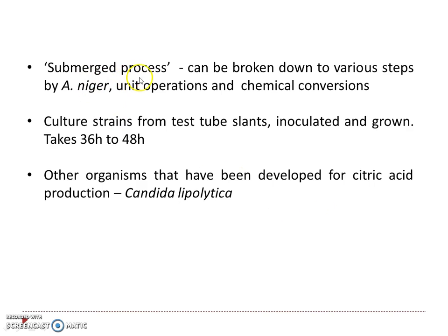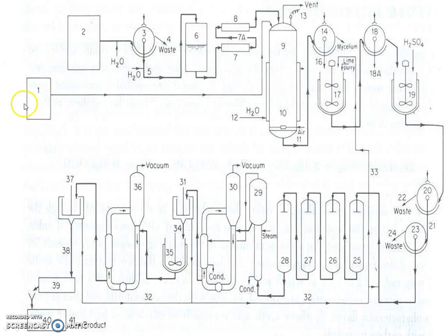The submerged fermentation process involves various unit operations. To start citric acid production, culture strains from test tube slants are selected, inoculated, and grown for inoculum development, which takes about 36 to 48 hours. Another organism used for citric acid production is Candida lipolytica. In the flowsheet, the feed is dextrose glucose syrup, and number 1 is the inoculum developed from slants grown for 48 hours.